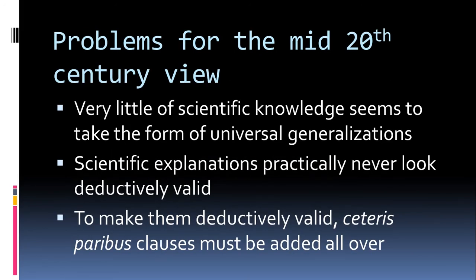That should strike you as awkward and not really how scientists ever talk. Some of the problems became clear when Kuhn came along and philosophers of science started actually caring about scientific practice. Very little of scientific practice has that clunky deductive-nomological form — there are very few truly universal generalizations, scientific explanations practically never look deductively valid, and to make them deductively valid you have to add an almost infinite list of ceteris paribus clauses. This view did not hold up to scrutiny.